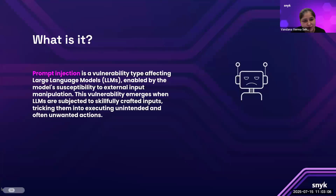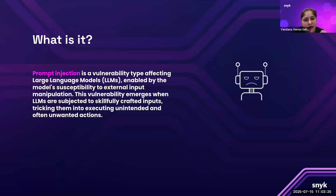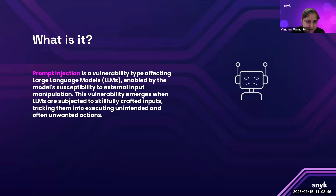Now, while we talk about prompt injection — what is prompt injection? A prompt injection vulnerability happens when someone sneaks tricky or sneaky instructions into what looks like a normal request to a large language model like ChatGPT. These hidden commands can make the model act in unexpected, sometimes harmful ways — like a polite waiter who suddenly throws your food out the window because someone whispered 'chaos mode' into his ear.